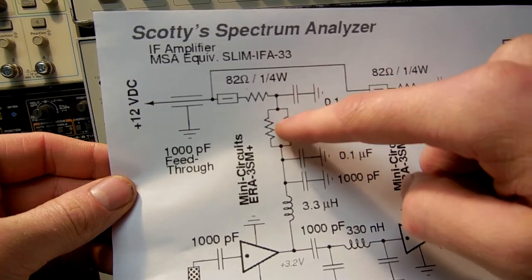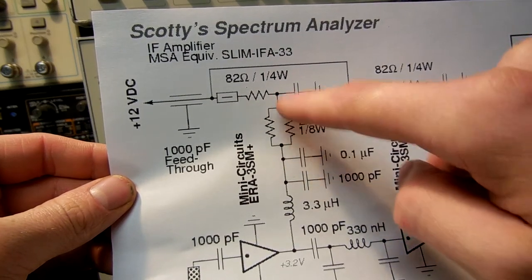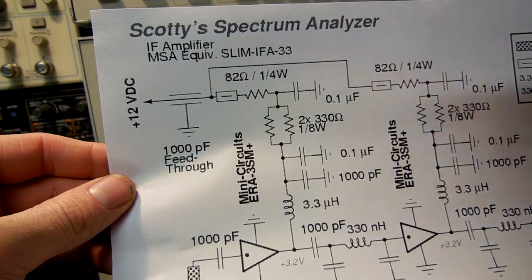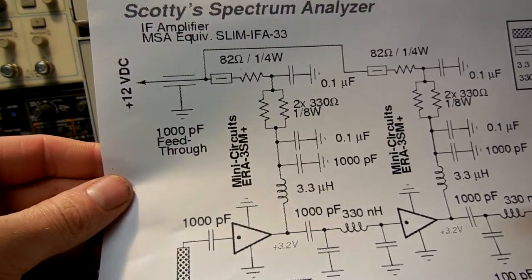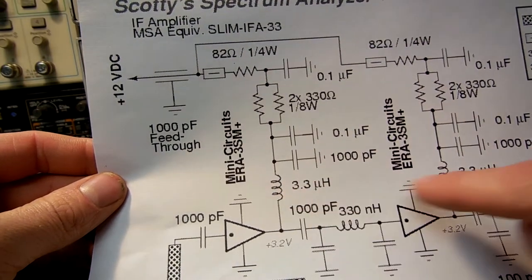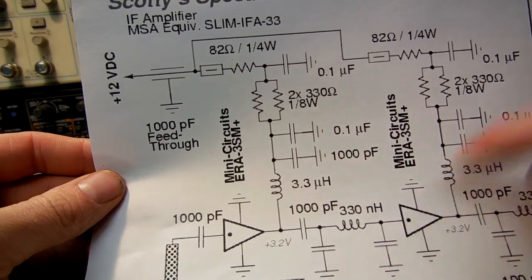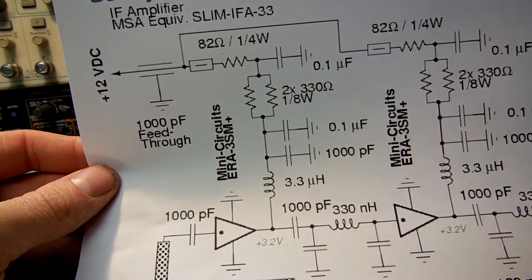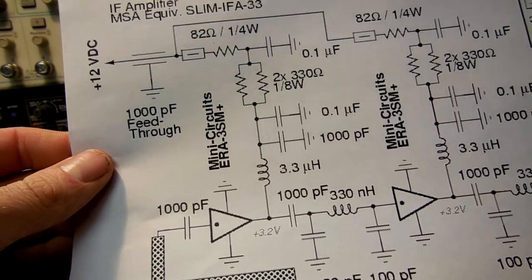The bias resistors are split between two just to increase the filtering. You want about quarter watt resistors because there is about 300 milliwatts of power dissipation. You have to be really careful on these coupling conductors. The self-resonate frequency should be above your operating frequency. The 3.3 microhenry inductors I'm using self-resonate at around 90 megahertz, so they should be good.